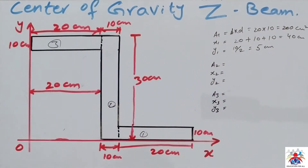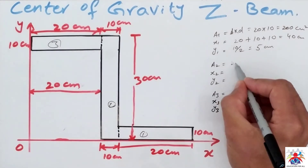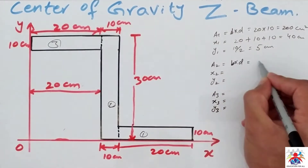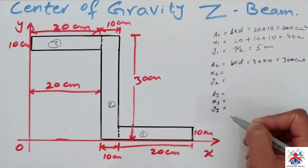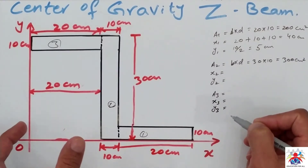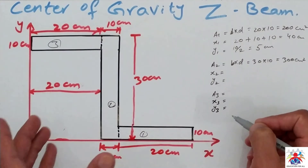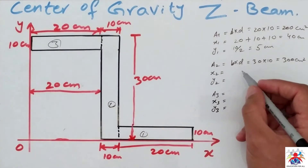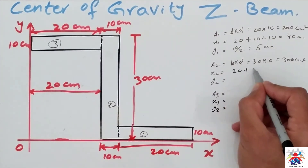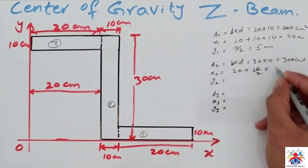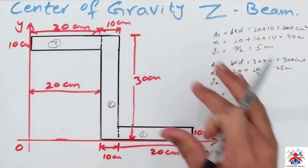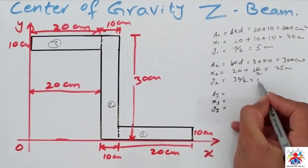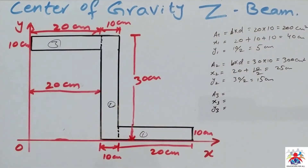Now for figure number two: area is base multiplied by depth, which is 30 multiplied by 10, equal to 300 square centimeters. For x2, we start counting from the origin point, so it will be 20 plus 10 divided by 2, which is 25 centimeters. Y-bar is half of 30, so 30 divided by 2 equals 15 centimeters.